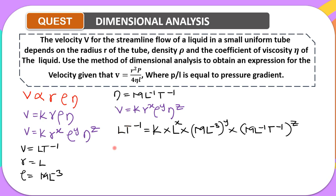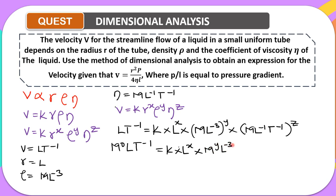Now we expand the brackets using the exponents y and z. For the density term, raising ML minus three to the power y gives M to the y times L to the minus three y. For the viscosity term, raising ML minus one T minus one to the power z gives M to the z times L to the minus z times T to the minus z. We now have all terms expanded on the right-hand side.